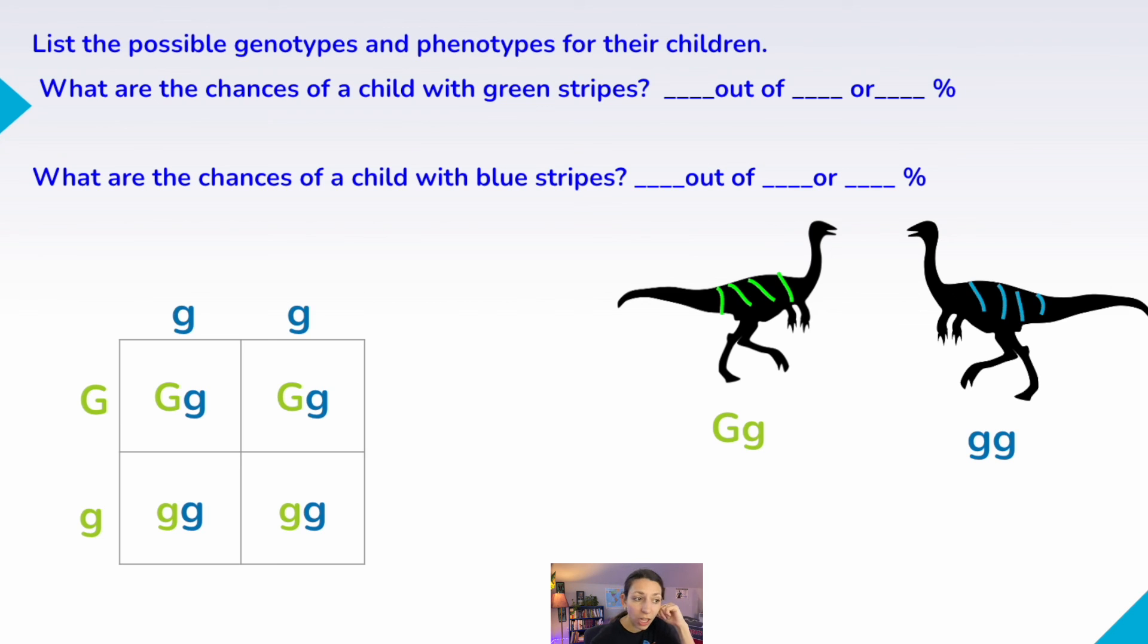So what are the chances of a child with green stripes? So let's look at these phenotypes. Now big G, little g would give us green, big G, little g would give us green, little g, little g would give us blue, and little g, little g would also give us blue. So two out of four, or if we simplify it, one out of two, or 50%. And then the chances of a child with blue stripes, it's the same, two out of four, or 50%.